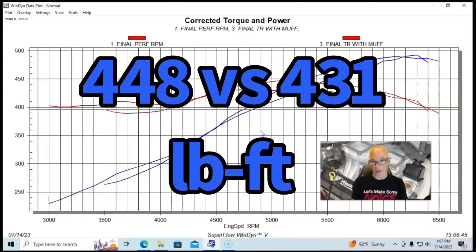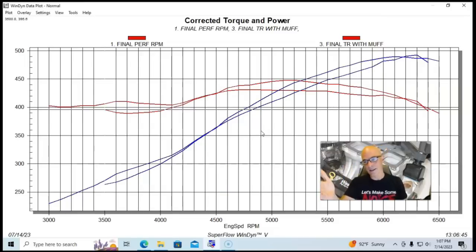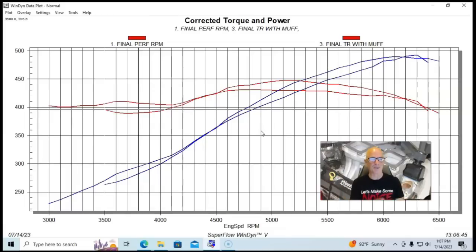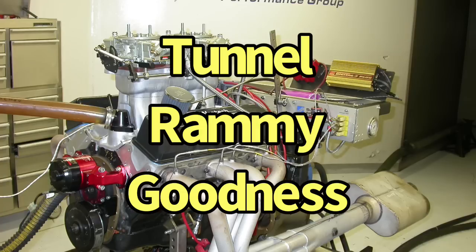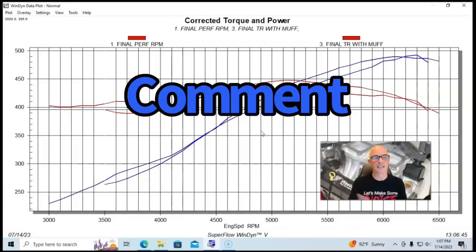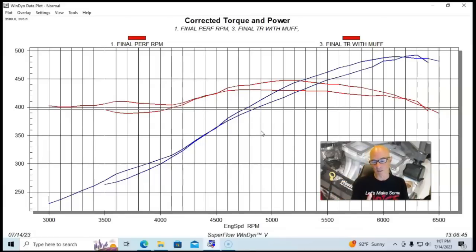431 foot-pounds for the RPM Air Gap, 448 foot-pounds for the Tunnel Ram. But again, oddly enough, out at the top even the RPM Air Gap made a little bit more peak power than the Tunnel Ram, which makes me think that something was kind of going on there at the top. Let me know in the comments what you guys think. Have you run Tunnel Rams before? Have you ever seen the Tunnel Ram not make more power than an RPM Air Gap or even a single plane Victor Jr. intake manifold?